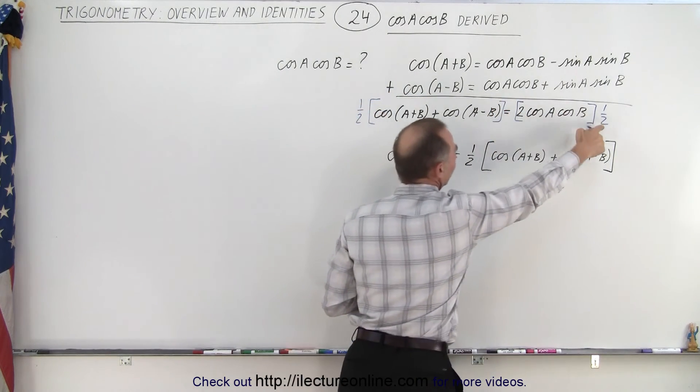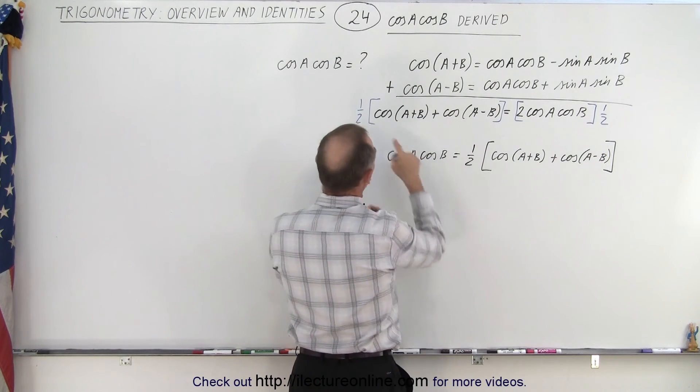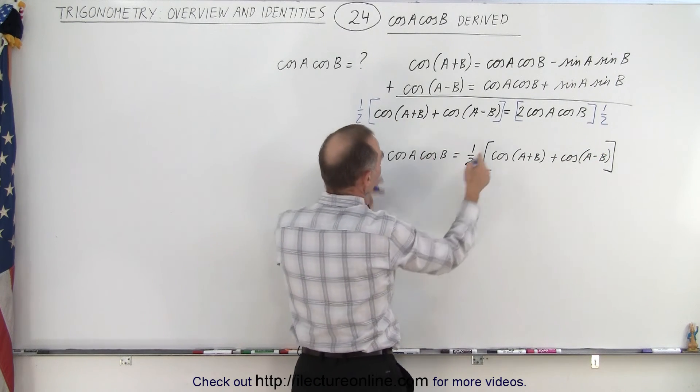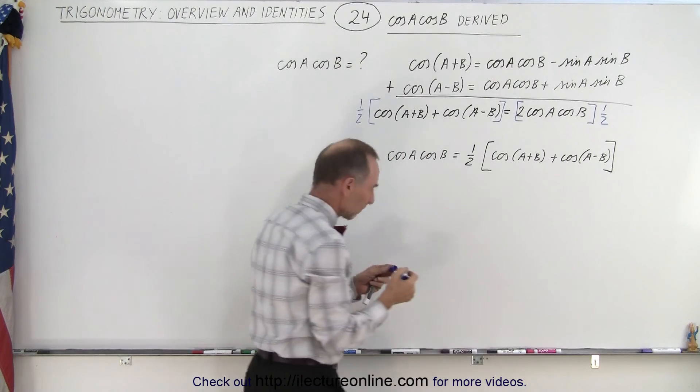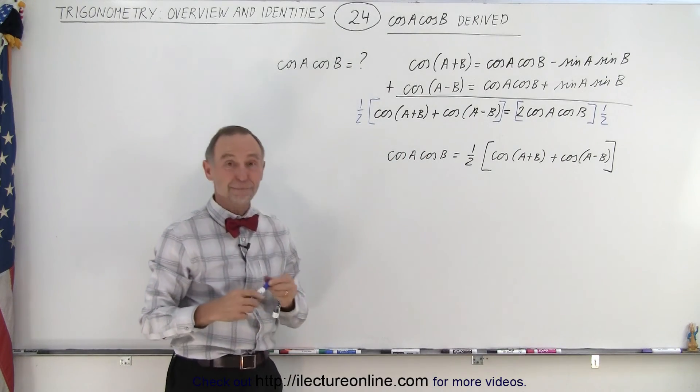Notice that this two cancels out to one half, so we end up with one half times what's inside the brackets. And that is how it's done.